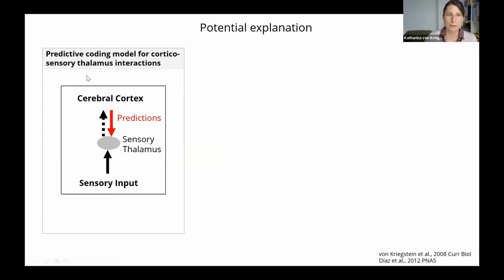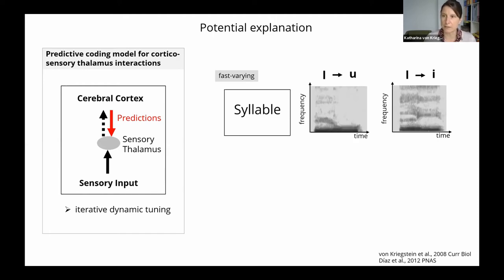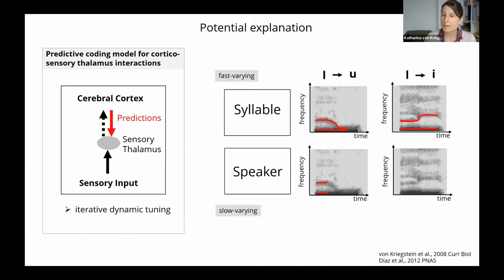We assume that there is a predictive coding going on between cerebral cortex and sensory thalamus, where the cerebral cortex provides predictions about the possible speech trajectory to the sensory thalamus to facilitate processing of the auditory signals. And we assume that this is a very dynamic thing, that there are really recurrent loops going on between these structures. And that this is especially important if we have to analyze fast-varying stimuli, such as when we want to recognize syllables, where we really have to track the trajectories of the speech signal here to perform the task. While, for example, in the speaker task, we just need to compute the summary statistics and can recognize differences in the speaker.